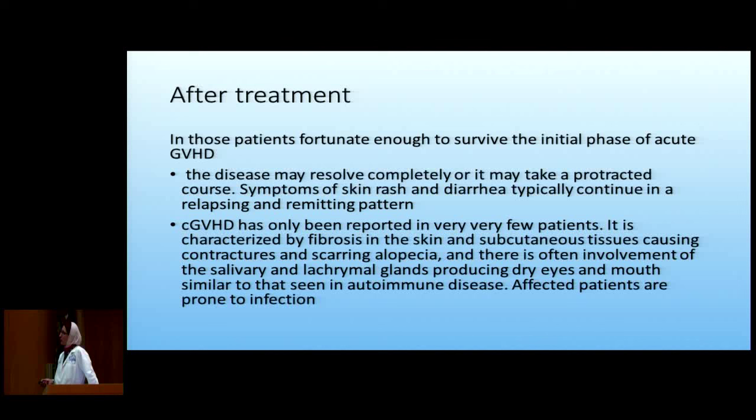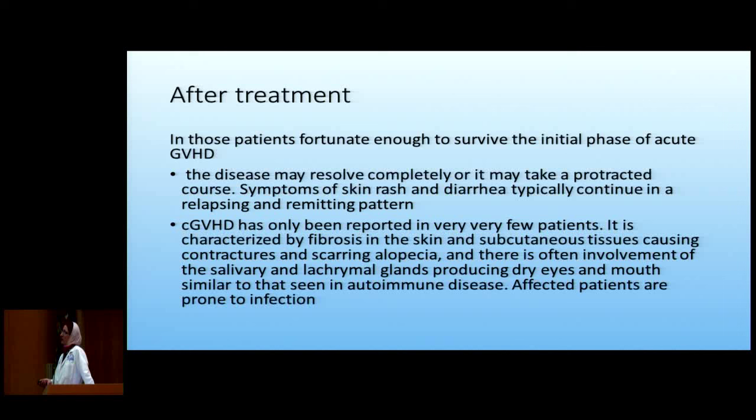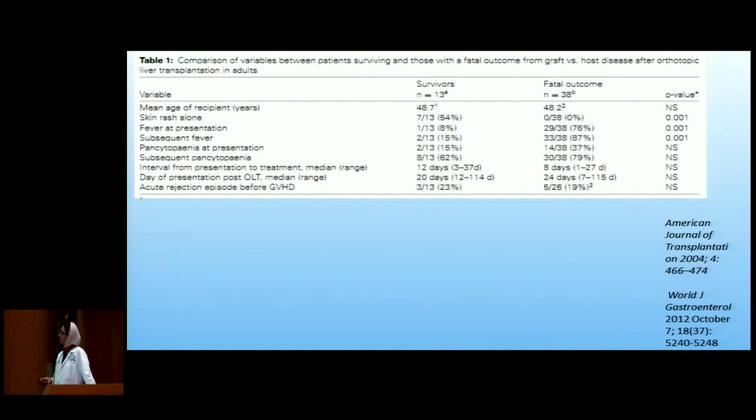After treatment, patients who are fortunate enough to survive often have symptoms that go back and forth — skin rash and diarrhea typically continue with relapses and remissions. Chronic GVHD is not well documented after solid organ transplant; very rarely, cases are documented. It resembles autoimmune disease — patients can get alopecia or fibrosis — but documented chronic GVHD cases are very rare in the literature.